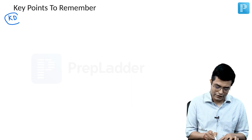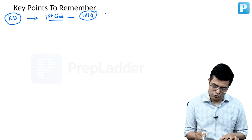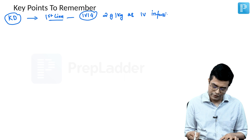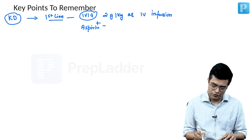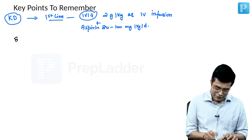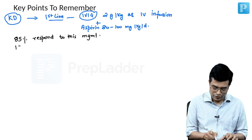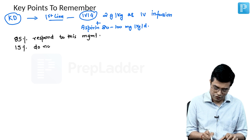Whenever you have a patient of Kawasaki disease, the guidelines say the first-line therapy will always be IVIG — the drug of choice — given at a dose of 2 gram per kg as IV infusion, plus aspirin. High-dose aspirin is used at 80 to 100 mg per kg per day in 4 divided doses. About 85 percent of patients usually respond to this management.